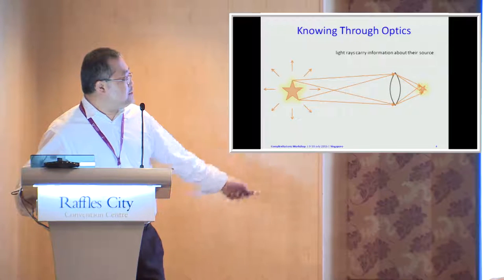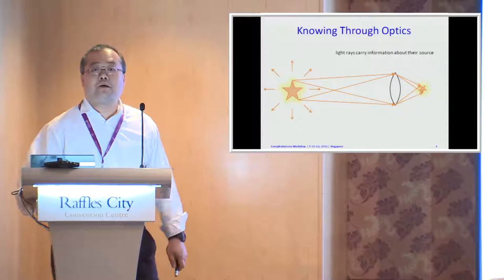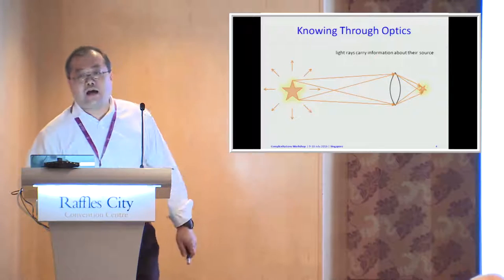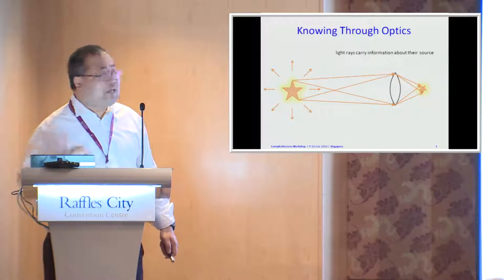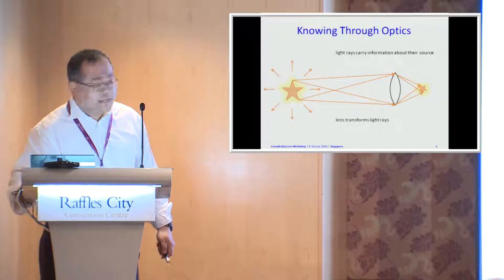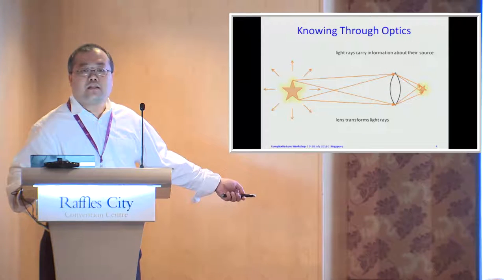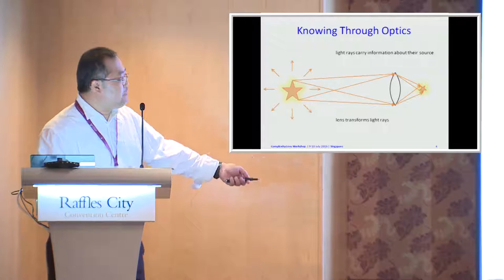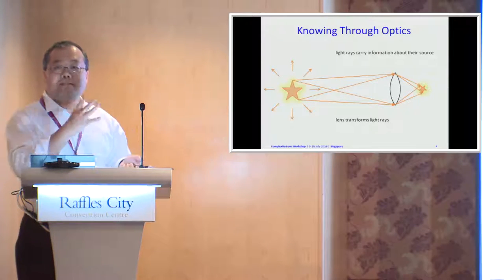The reason for this is that light rays carry information about their source. All the light emitted by the star carries information outwards. If you can collect those light rays through the lens, the lens needs to perform some kind of transformation. In the simplest geometric optics interpretation, the lens bends the light — it changes the direction of light rays and forces them to converge to give you an image.